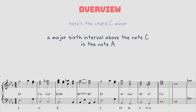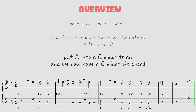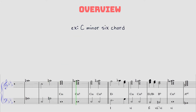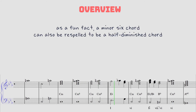A major 6th interval above the note C is the note A. Put A into a C minor triad and we now have a minor 6 chord. As a fun fact, a minor 6 chord can also be respelled to be a half diminished chord.